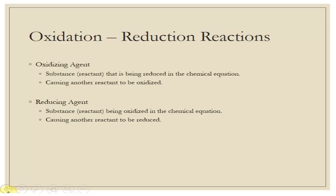We also need to consider what is happening in the reaction itself, and we do that with our agents. An oxidizing agent is the substance — specifically the reactant on the left — that is being reduced in the chemical reaction. By being reduced, by gaining electrons, it is taking electrons from something else and causing that thing to be oxidized. So the reactant that is reduced is our oxidizing agent, because it's causing the oxidation of somebody else.